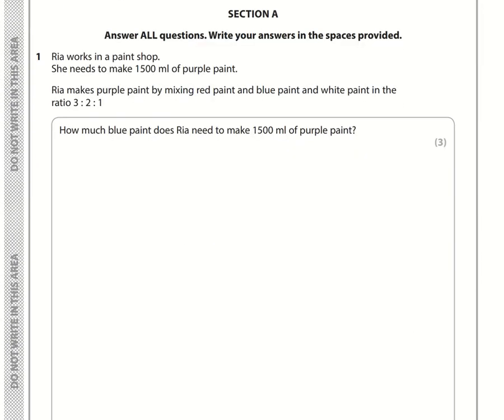Let's take a look at question number 1. Ria works in a paint shop. She needs to make 1500ml of purple paint. She makes purple paint by mixing red, blue and white in the ratio of 3 to 2 to 1. How much blue paint does Ria need to make 1500ml of purple paint?